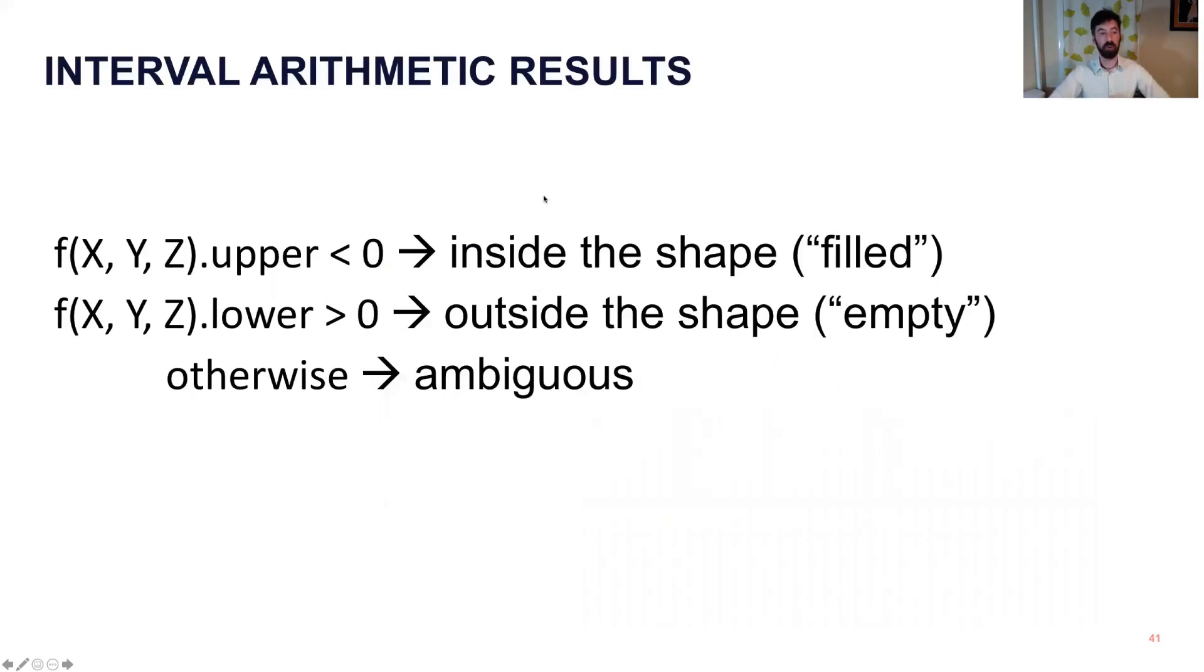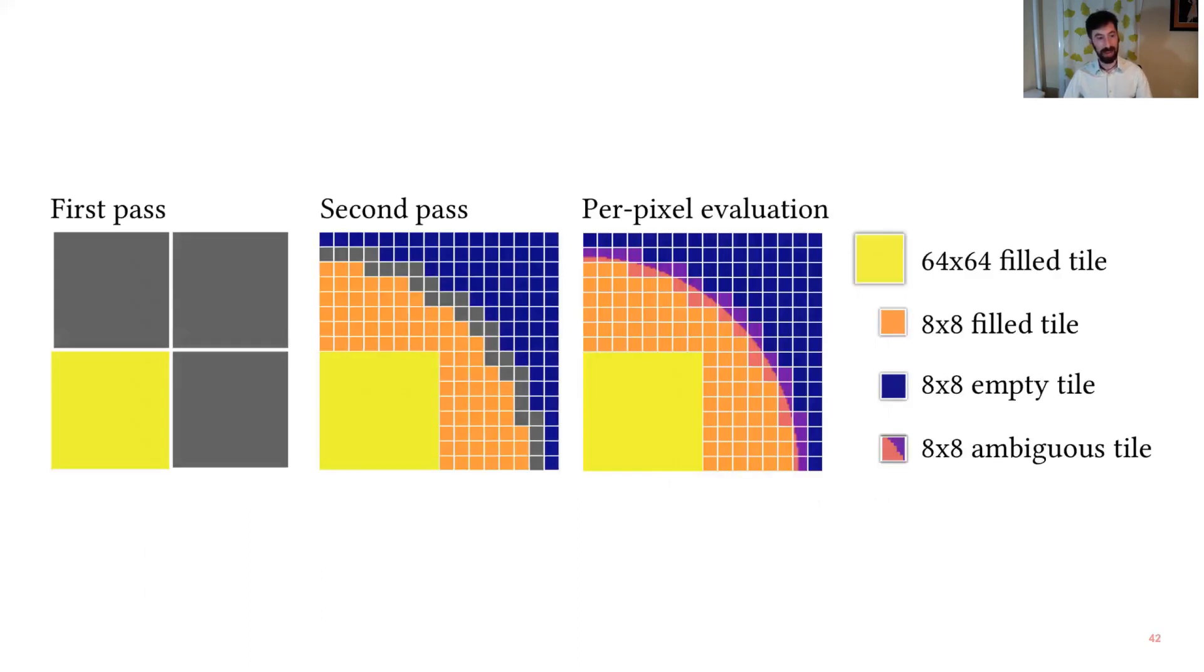And once we have this interval, we can do something very cool, which is we look at the upper bound of the interval, and if that is negative, then every single point within that region is negative, which means that we are inside the shape for that entire region. So we've done one interval evaluation, and we've proved a whole chunk of the shape to be inside. Similarly, you can also prove chunks of the shape to be outside if the lower bound is positive. Otherwise, either that region contains the boundary or it's just being conservative and you're not quite sure. And so now this image that I showed before maybe makes a little more sense, where the big region here is proved to be inside the shape at the first pass. These orange and blue regions are inside the shape of the second pass, and then we do per pixel evaluation on the remaining ambiguous regions which contain the boundary.